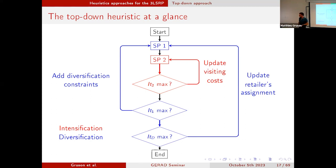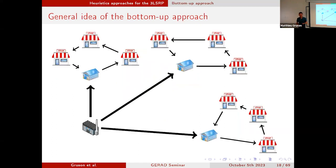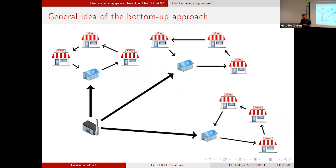The second idea is a bottom-up approach. In this heuristic, it's not the plant that is the leading entity of the supply chain — it's the retailers. The replenishment decisions at the retailer level are the leading decisions in my supply chain.